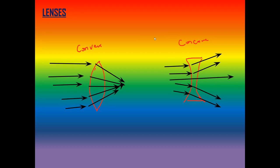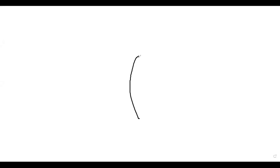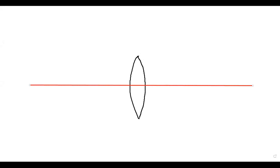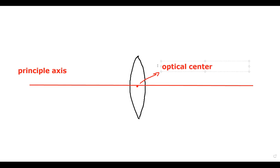We will discuss how an image is formed by a convex lens. For a convex lens, there is an imaginary line passing through the center of the lens called the principal axis. The point where this line touches the lens is the optical center. The point where all light rays converge is called the focus, and the distance between the optical center and the focus is known as the focal length.